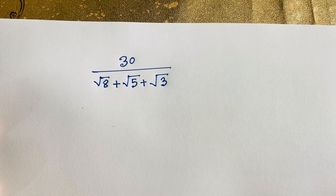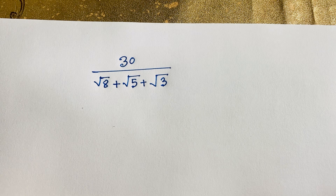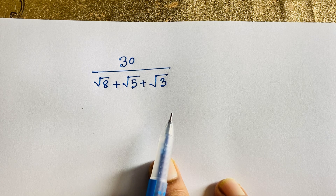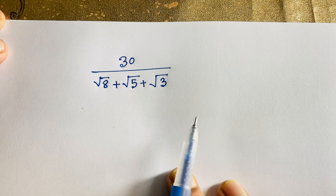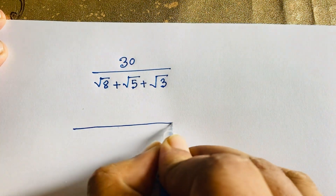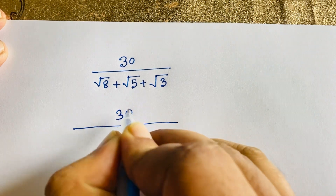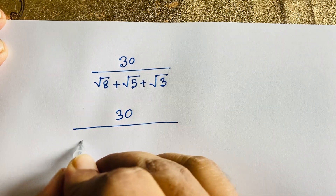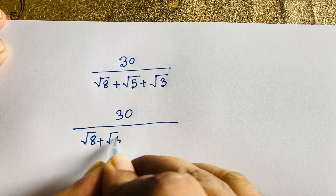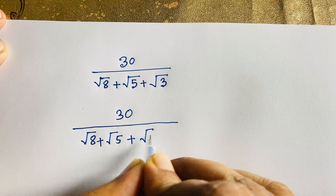Hello everyone. This is an interesting math question and also a math olympiad question. We need to solve 30 over square root 8 plus square root 5 plus square root 3.